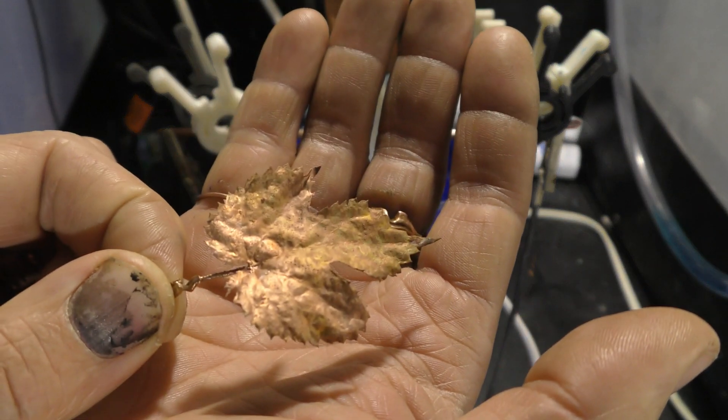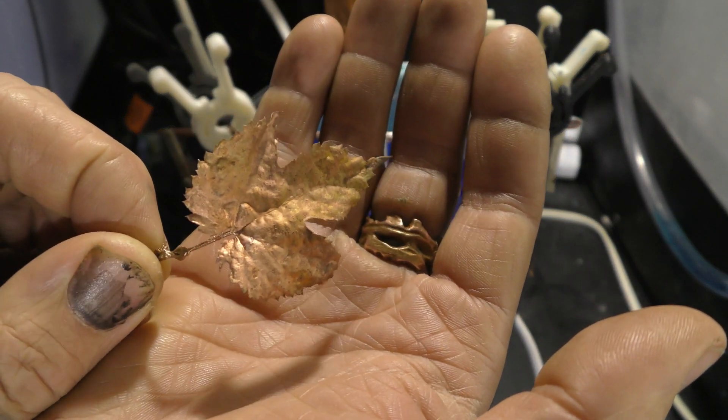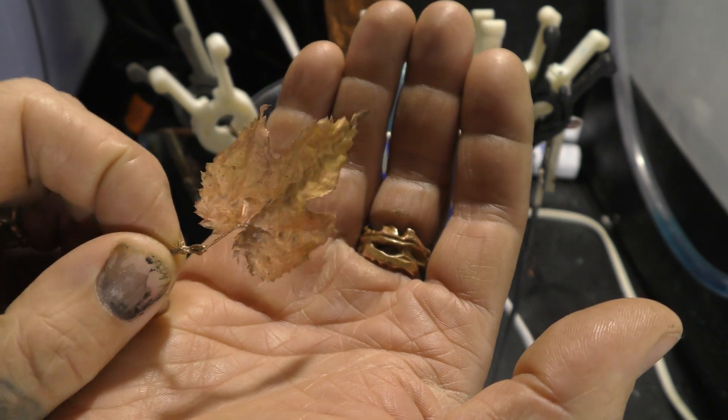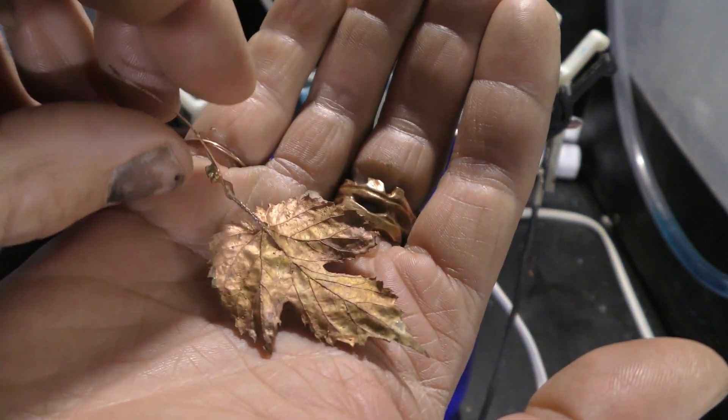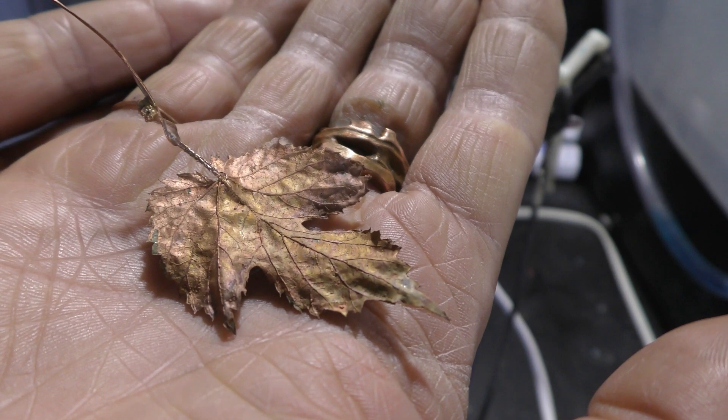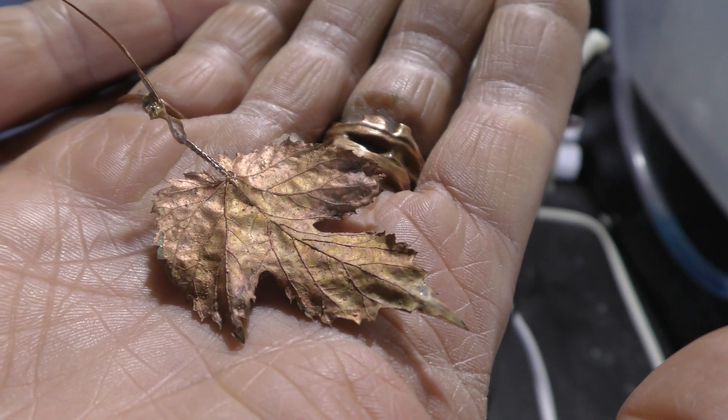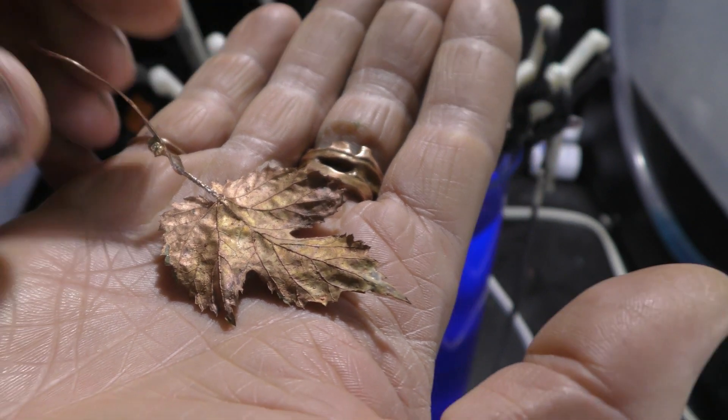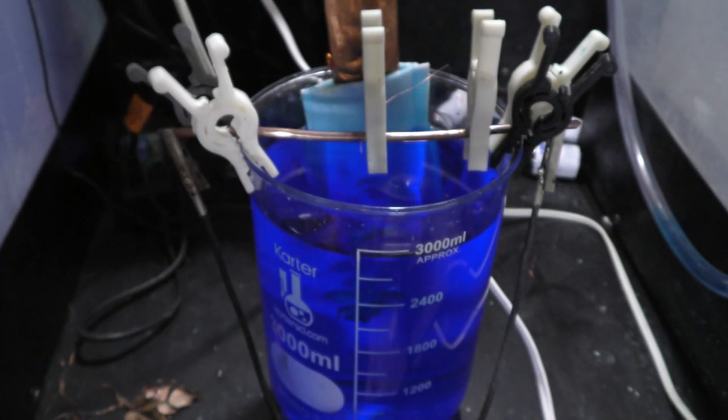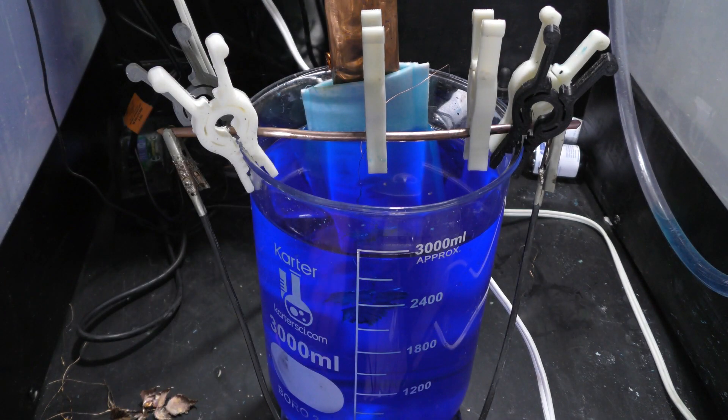So, like this for example. This has a very thin, even amount of copper and preserves all the detail. It looks like a leaf, right? But it is actually copper.